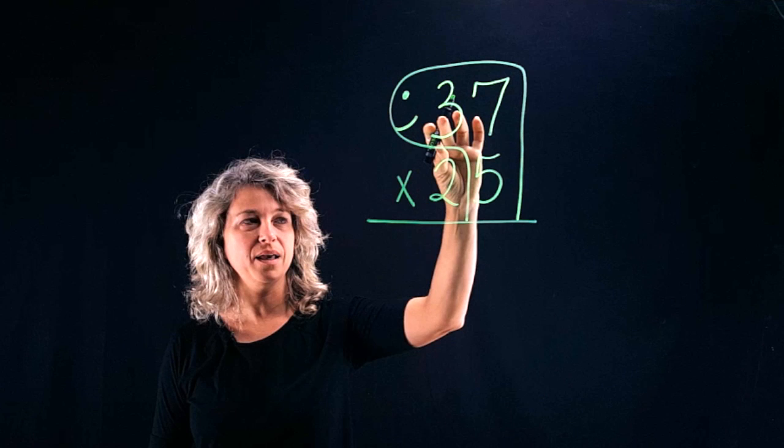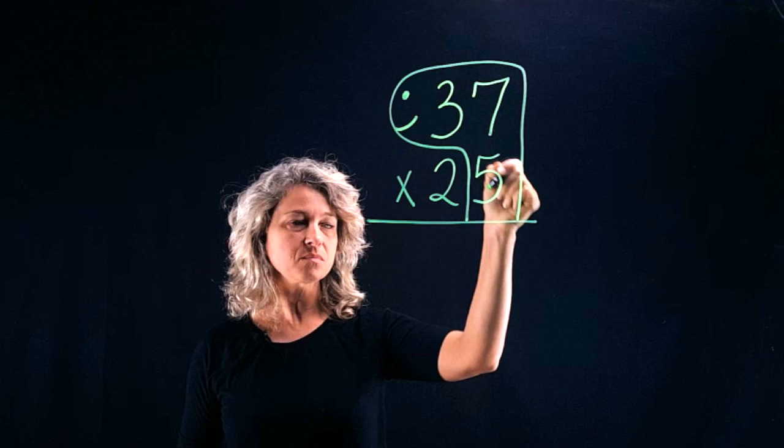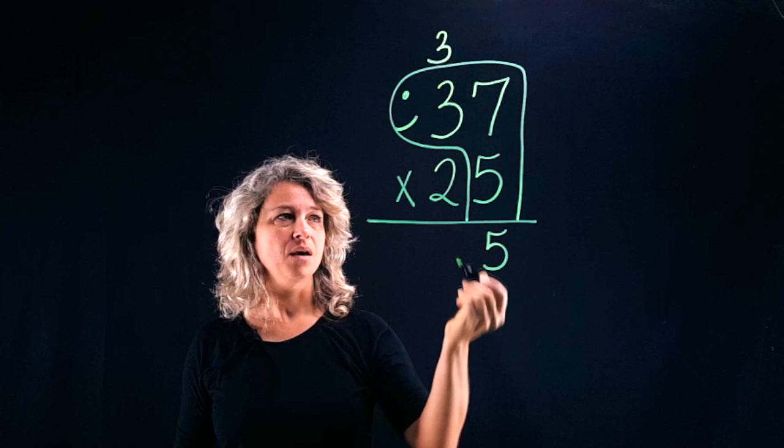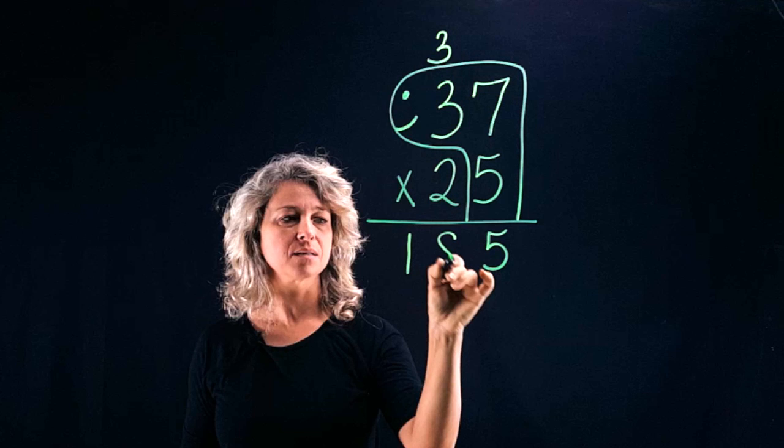You'll see and you'll understand why this is helpful as we go through. The first thing we're going to do is multiply five times seven. Five times seven is thirty-five. And then your next step is multiply five times three. Five times three is fifteen, plus three more is eighteen. Put your eighteen down.